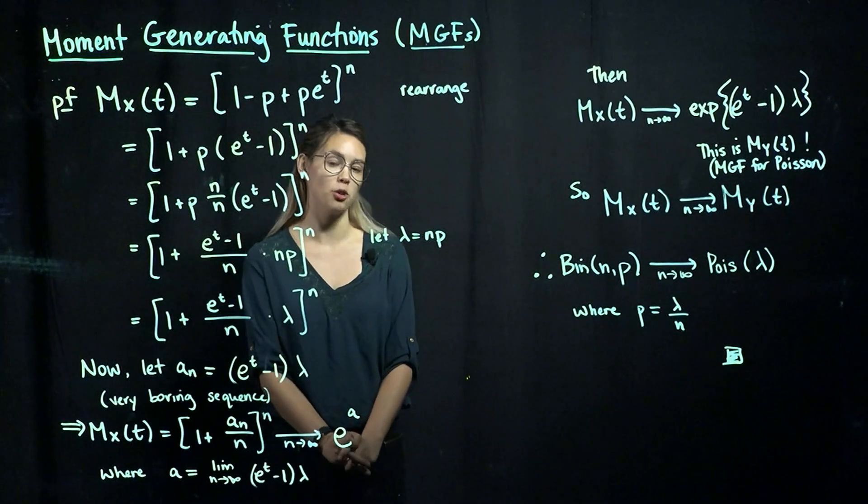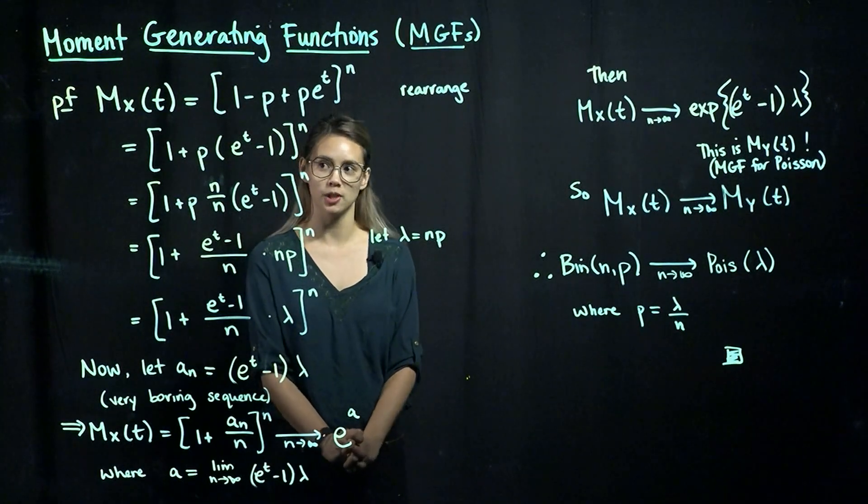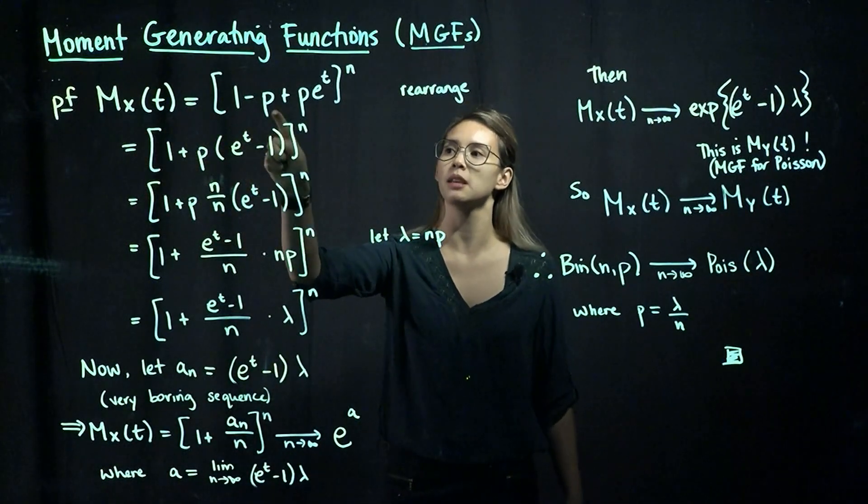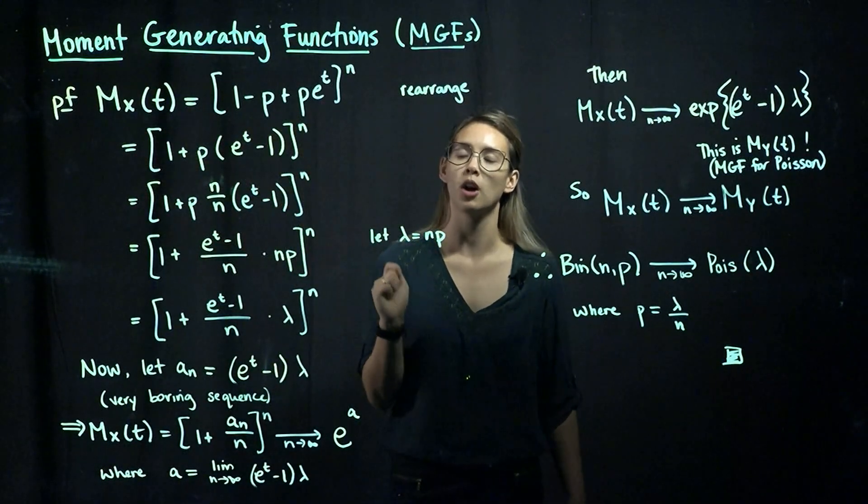So let's start off with our binomial random variable and look at its MGF. So as a review, we know that its MGF is 1 minus p plus pe to the t, all of that to the n.